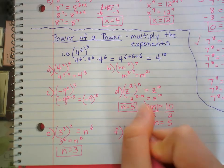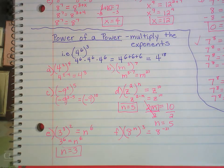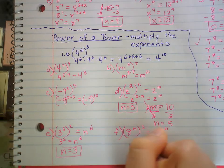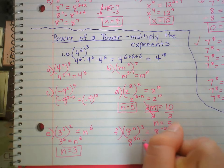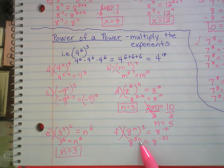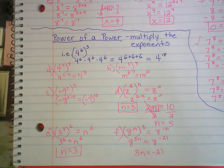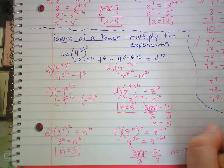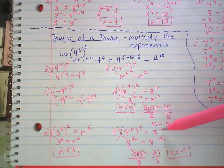8 to the n to the 3rd equals 8 to the negative 21st power. Try to solve this one on your own. Power of a power — this is the same as 8 to the n times 3, or 3n, equals 8 to the negative 21st. When they have the same base, just set the exponents equal: 3 times n equals negative 21. Box it up — they're being multiplied, so divide both sides by 3. n equals negative 7. Let's check: 8 to the negative 7 to the 3rd — negative 7 times 3 is negative 21. Yes, correct.